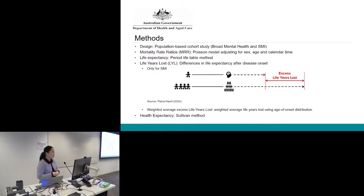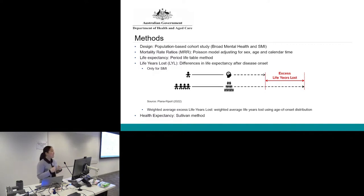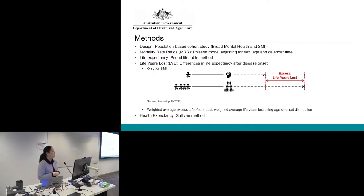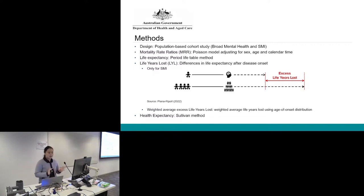In terms of metrics, we're proposing a harmonised panel of mortality metrics. This was a call by earlier Denmark researchers published in The Lancet, who said there is a need for consistent metrics to allow for comparisons within nations as well as by groups. We are continuing with that harmonised panel: the mortality rate ratio, the life expectancy metric, and the life years lost metric. We also propose to add one additional metric — the health expectancy metric.